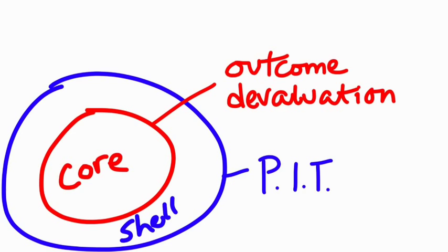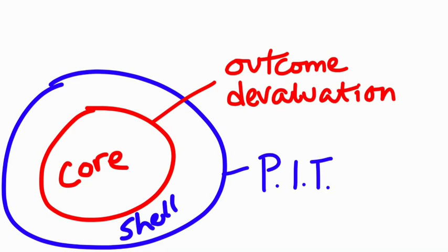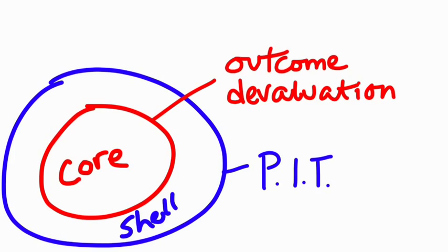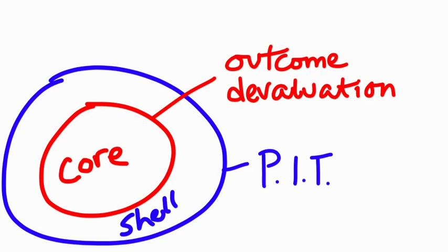From these neurobiological studies, it has been demonstrated that PIT and outcome devaluation can be selectively manipulated. In other words, they are not controlled by the same underlying process as two-process theory would have you believe.